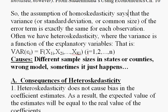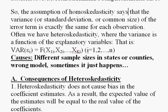Homoscedasticity, in the most brief way to explain it, is the assumption that the variance of the error term — or the standard deviation, the common size of the error term — is the same for all observations. If you have heteroscedasticity, what you're saying is that the variance of the error terms is not the same for different types of observations. This is very important: if the variance of the error terms is not the same for all observations, then we can probably detect that by trying to see if the variance of the error term is a function of the explanatory variables.